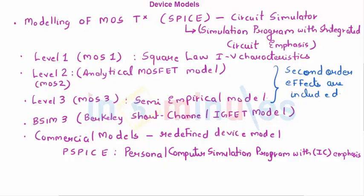Now level 1 models are the models which take into consideration the square law IV characteristics. It also takes into consideration channel length modulation and body effect but it does not take into consideration any of the second order effects which we have already studied.